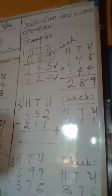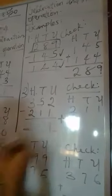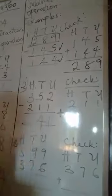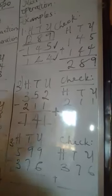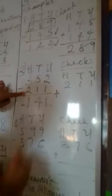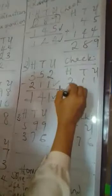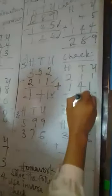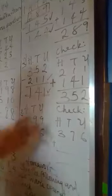Now for this: 352 minus 211. 2 minus 1 is 1, 5 minus 1 is 4, 3 minus 2 is 1. Now to check, I will use this figure and add with this. 1 plus 1 is 2, 1 plus 4 is 5, 1 plus 2 is 3. So you can see that works.